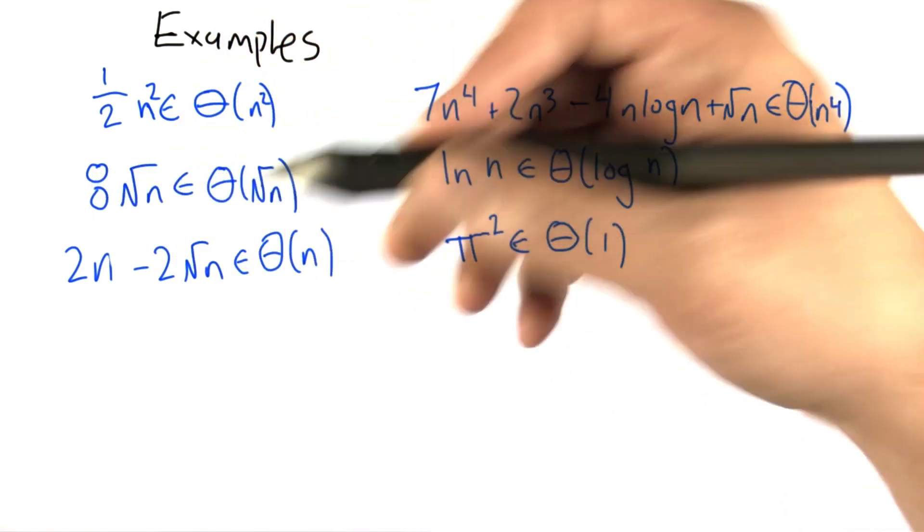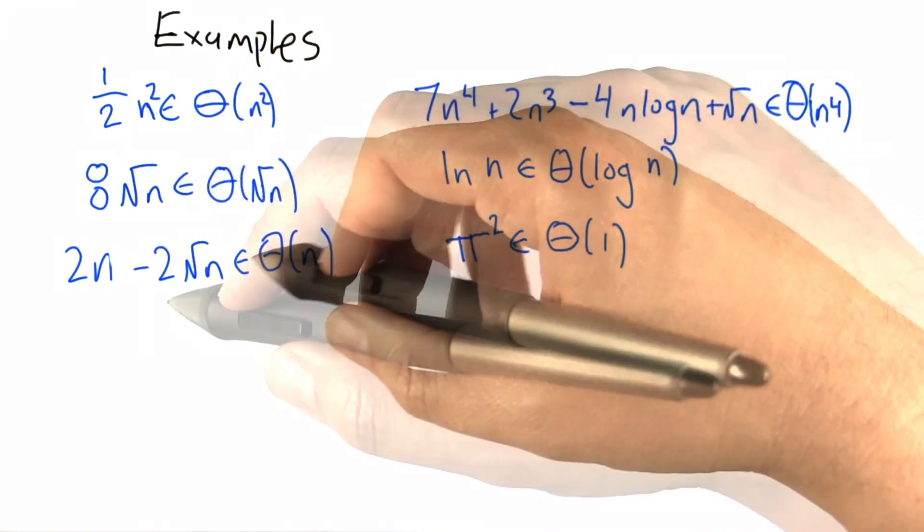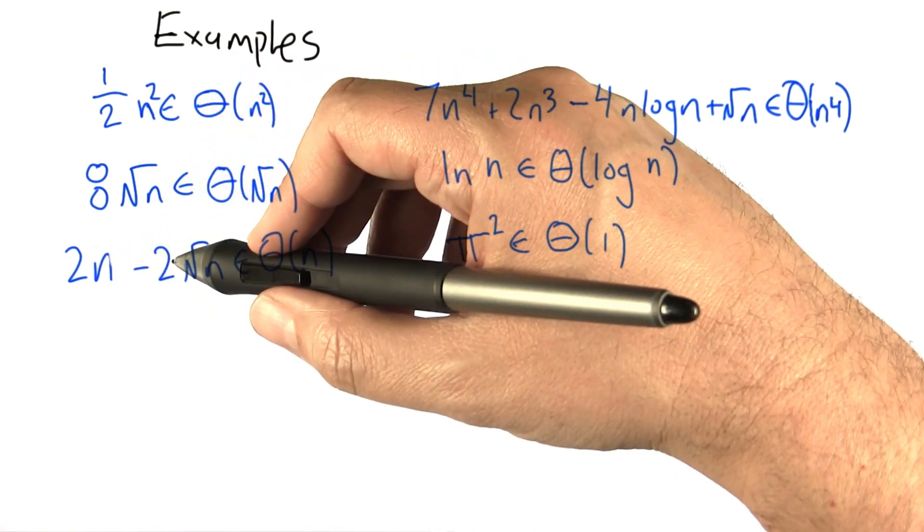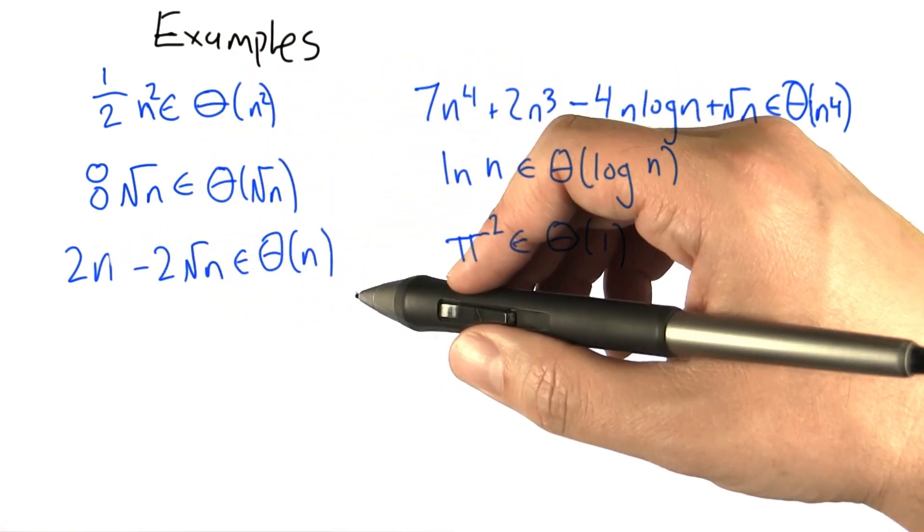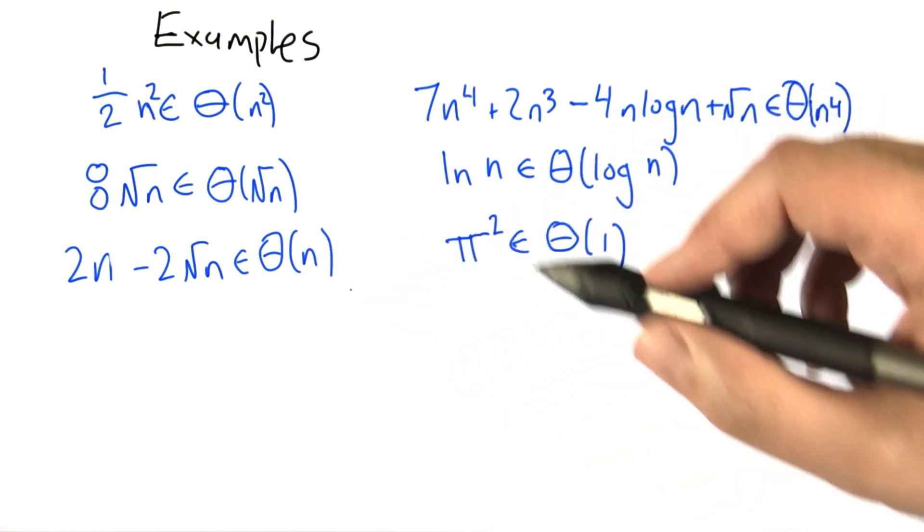8 times √n we can think of as just √n, Big Theta of √n. Our equation from before, 2n minus 2√n, just becomes Big Theta of n. It's just a linear function asymptotically.